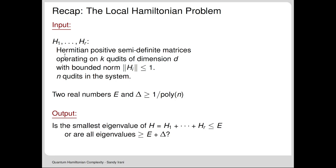Here's our problem again: we're given a sequence of Hermitian, positive semi-definite matrices, each operating on k qubits of dimension d, norm bounded, and two numbers. The gap number is bounded below by 1 over poly, and we want to know if the smallest eigenvalue of the Hamiltonian—the sum of the terms—is at most E or greater than or equal to E plus delta.